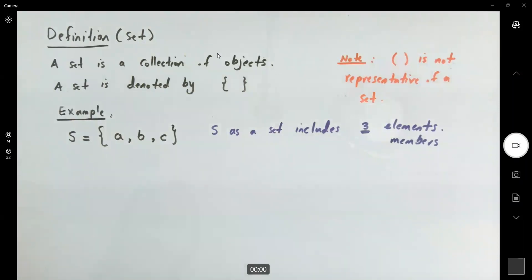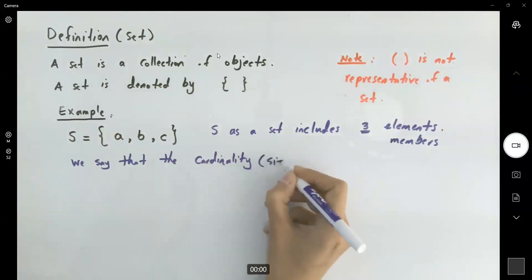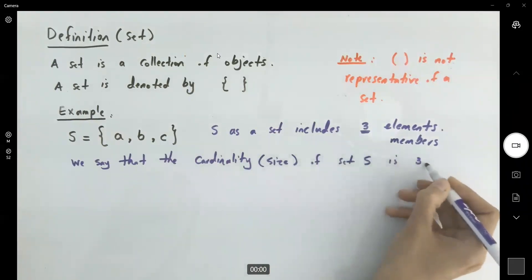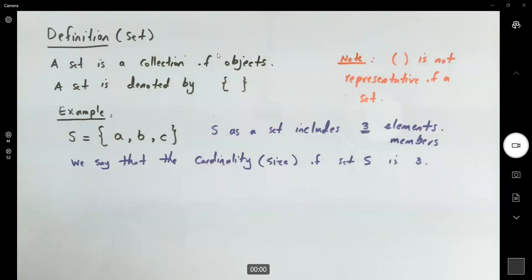We say that the cardinality, the size of this set is three. The cardinality or the size of set S is three. How do we show that? N of S, or some books use two vertical lines to represent the cardinality of set S. The size of set S or the cardinality of set S is three.